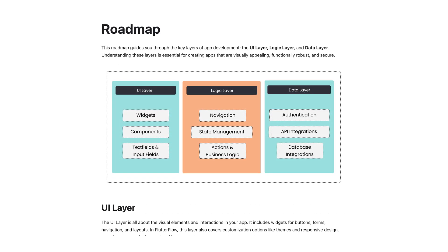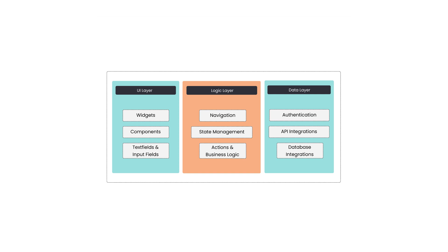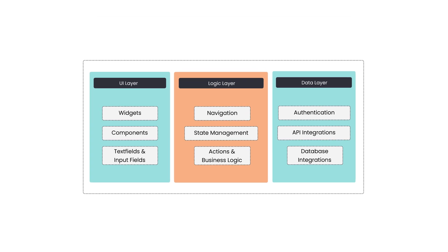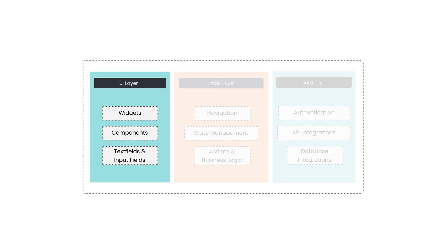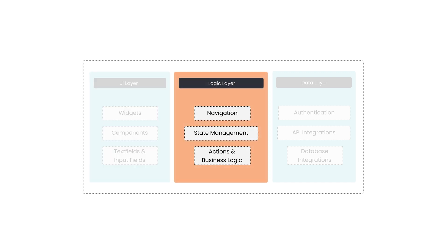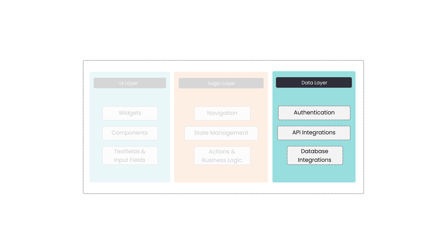First, we now have a roadmap to guide you through the different layers of app building. For example, the UI layer focuses on widgets and components which essentially make up the user interface. Next, we guide you through the logic layer which primarily references our state management documentation and how to work with actions and business logic. Finally, we cover the data layer which includes references to authentication, databases, and API integrations.